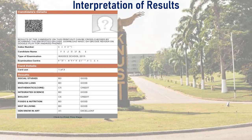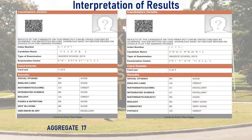Using the minimum entry requirements, the university picks English, core mathematics, integrated science, and three electives. When you add these up, the final aggregate is 17. Note that the values of C4, C5, and C6 are all calculated as 4.